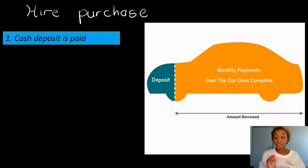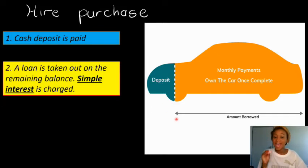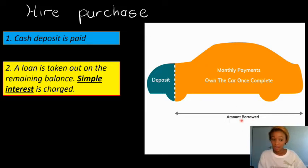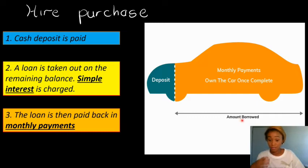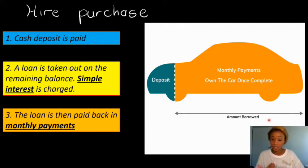The first condition, as you can see from this card, is you must pay the deposit. Then a loan is taken out — as you can see the orange part — on the remaining balance. Simple interest is charged, and then the loan is paid back in monthly repayments, monthly installments. So let's look at a question now that will help you understand what we mean by this.